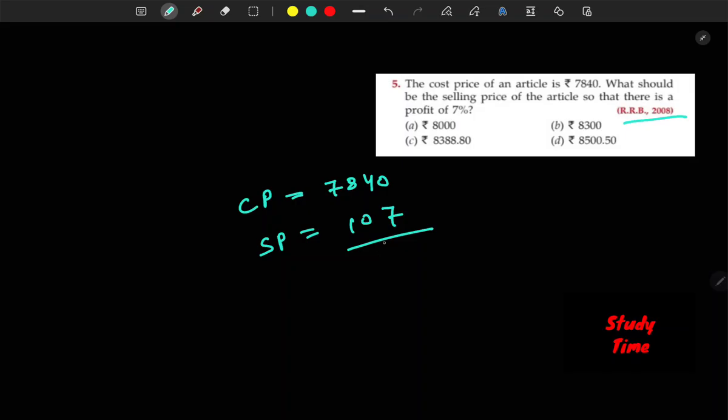For selling price, SP, profit percent equals to profit. The profit is SP minus CP upon CP into 100.